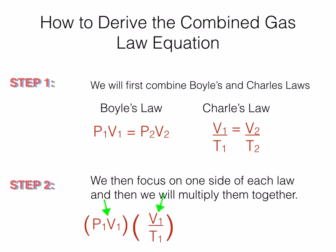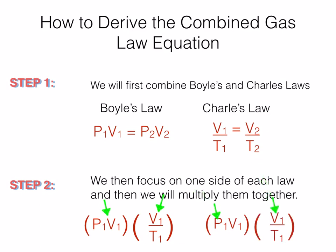Now we're going to do the same exact thing to the right side of the equation. We're going to take the P2V2 and bring it over, and we're going to take V2 divided by T2 and bring it down. And when we do, that's going to give us the same number, because both of these things are equal to one another.